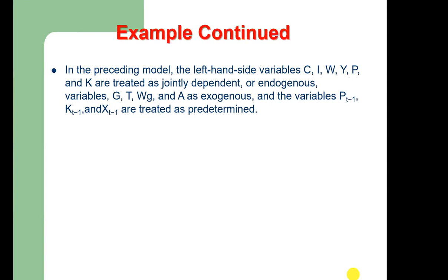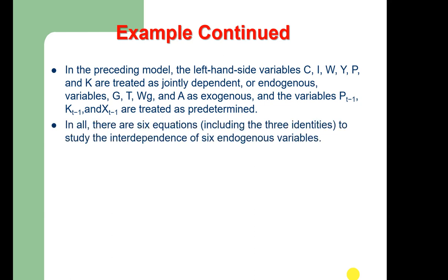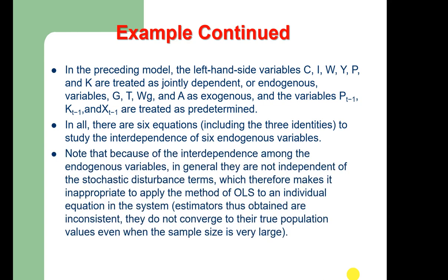In the Klein model, the left-hand side variables C, I, W, Y, P, and K are treated as jointly dependent endogenous variables, whereas G, T, WG, and A are exogenous. Variables P(t-1), K(t-1), and X(t-1) are treated as predetermined. There are six equations including three identities. Because of interdependence among endogenous variables, they are generally not independent of the stochastic disturbance terms, making OLS inappropriate — estimators obtained would be inconsistent and do not converge to population values even in large samples.